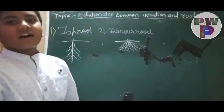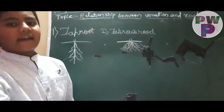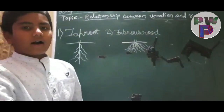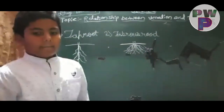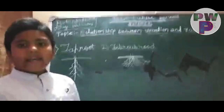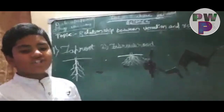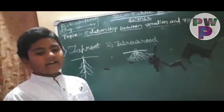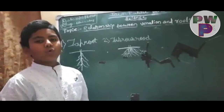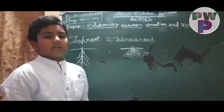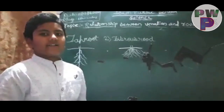For example, tap roots are found in mango, neem, tea, carrot, radish, beetroot, and others.